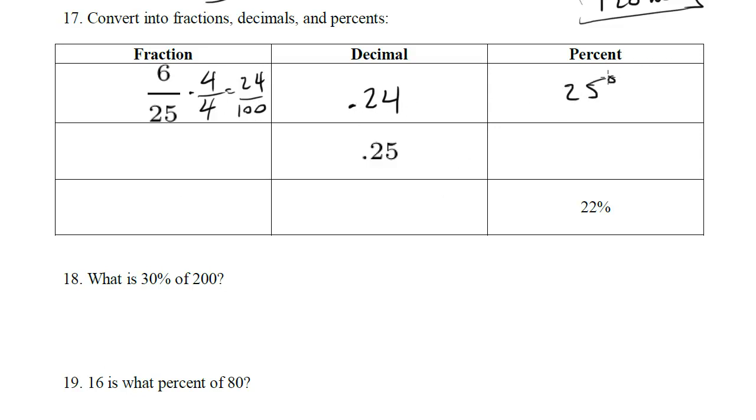you just move this over two spaces, and this becomes 24%. For 0.25, we can make that 25% pretty easily. This is going to be 0.25, that's the same thing as 25 over 100, or one quarter.